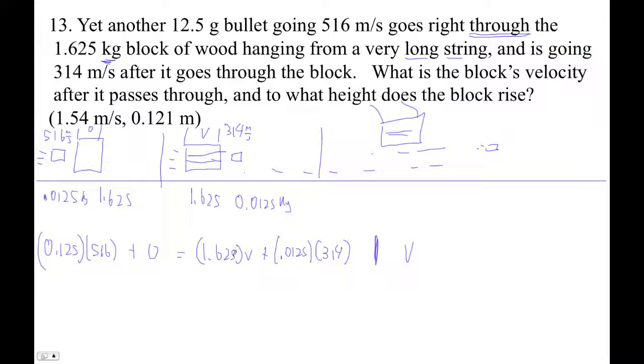The velocity is, I'm going to start on this side. So 0.0125 times 516, I'm going to subtract this, minus 0.0125 times 314. And now I'm going to divide by 1.625. And this is 1.5538.